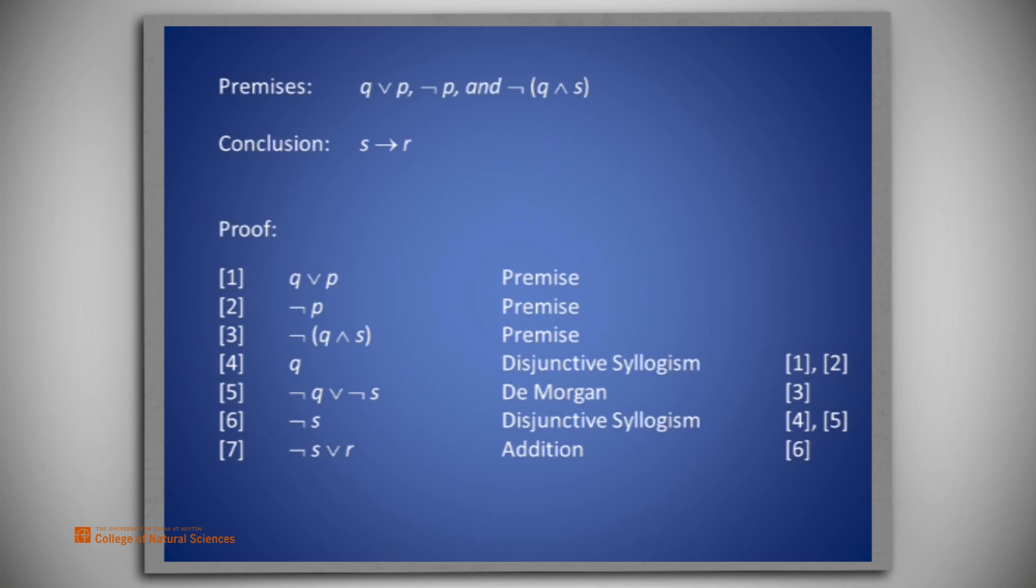First, we use addition on line 6 to assert either S is false or R is true, and then, using conditional disjunction, we rewrite not S or R in the form S implies R. And that is the conclusion we sought.